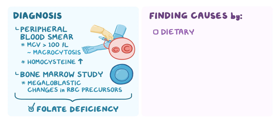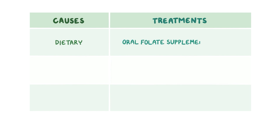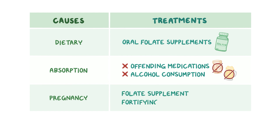First, low dietary intake should be ruled out, and a pregnancy test should be done. Then, the history can help identify other causes, like medications or excessive alcohol consumption. When the cause of folate deficiency is dietary, it is treated with oral folate supplements. When the problem is absorption related, it has to be managed by stopping the offending medications or limiting alcohol consumption. In pregnant people, folate deficiency can be avoided by providing folate supplements or fortifying foods like grains and cereals with folate.